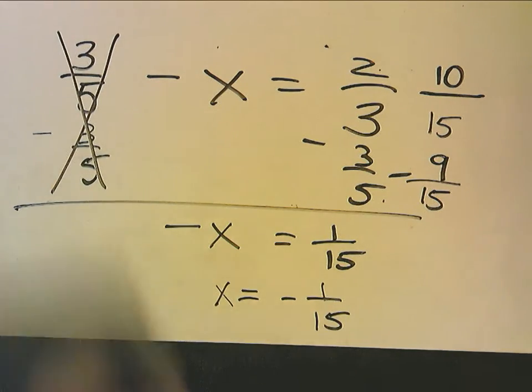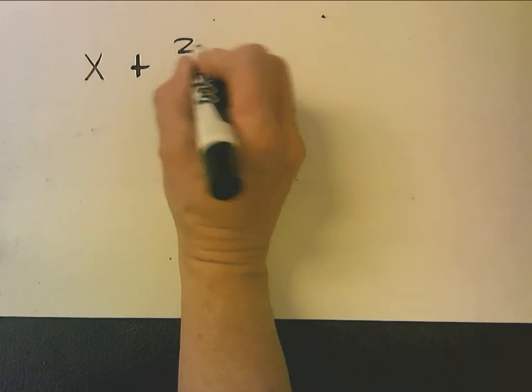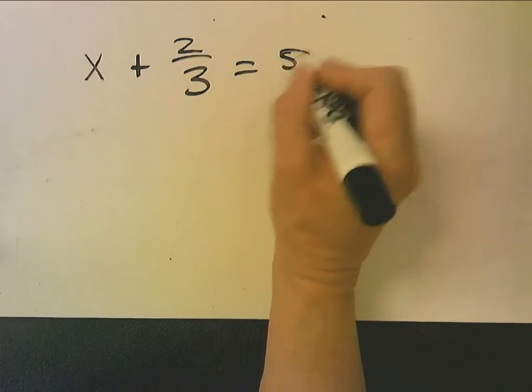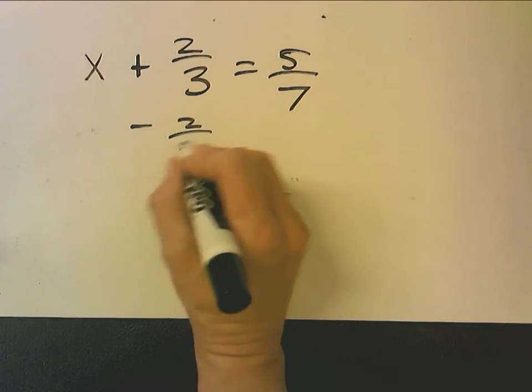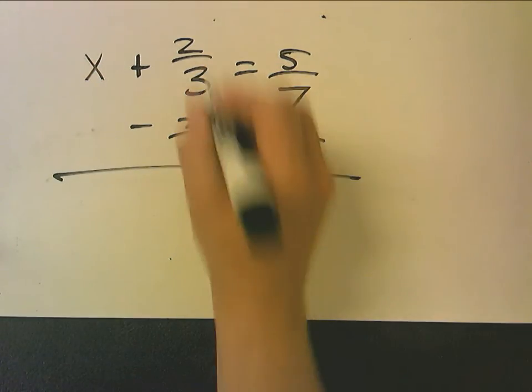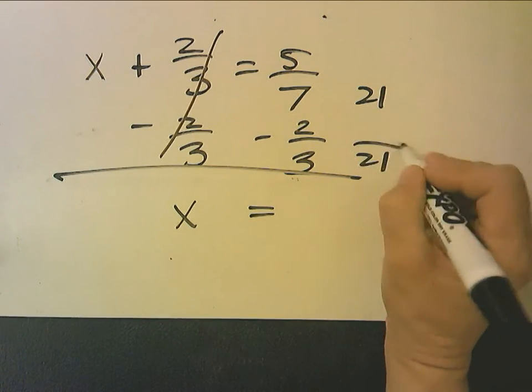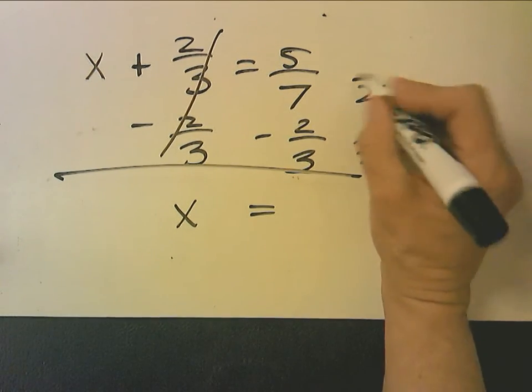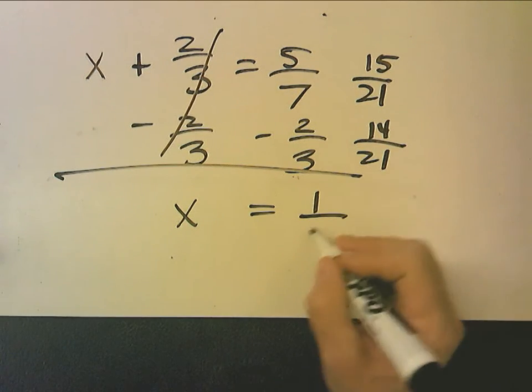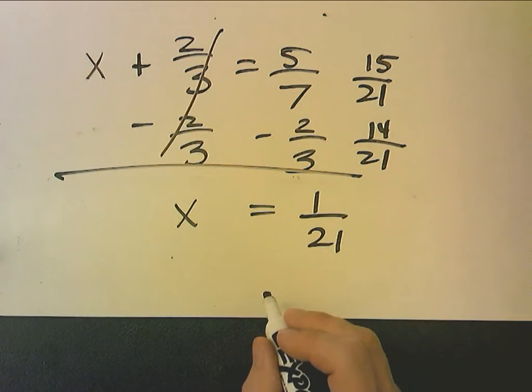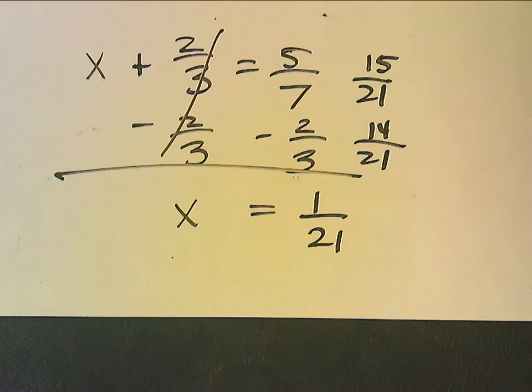So again, stop the video and you try the next one on your own. Turn it back on when you're done, and let's see if we agree. So x plus 2 thirds equals 5 sevenths. I'm going to subtract 2 thirds, subtract 2 thirds. Get a common denominator. That's 14, that's 15, 15 minus 14 is 1 over 21. So x equals 1 over 21.